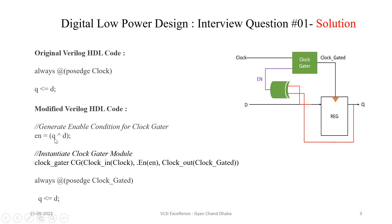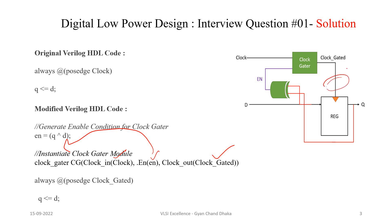We instantiate a clock gator circuit — which can be an AND gate based, OR gate based, or latch-based clock gator as discussed in a previous chapter. The input clock signal and the derived enable signal are fed into the clock gator, which produces a gated output clock. The flip-flop then uses this gated clock, so at every positive edge of the gated clock, the flip-flop output gets the new input data.